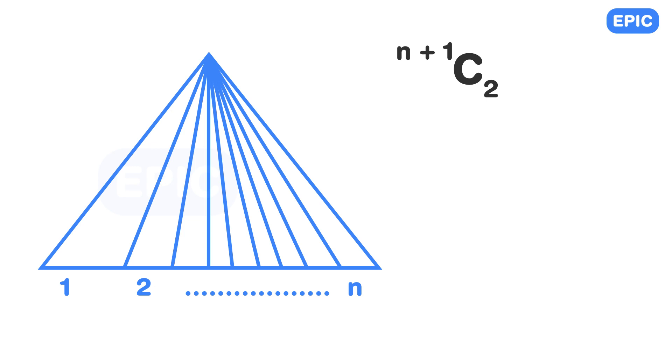If you pay attention, the top vertex is part of all the large and smaller triangles. Now to form a triangle, we need two more points.